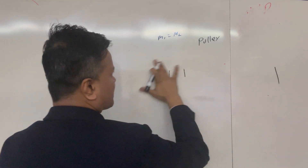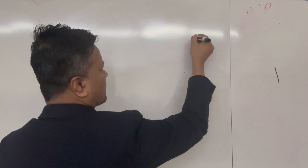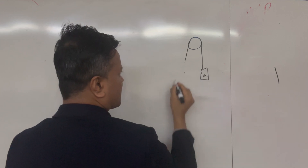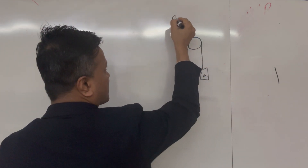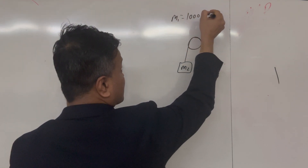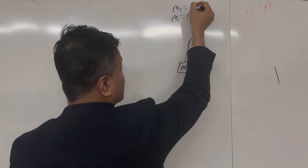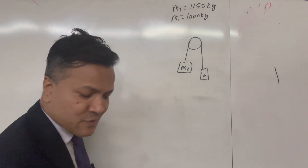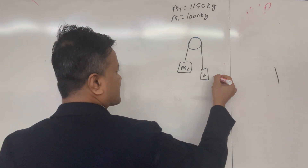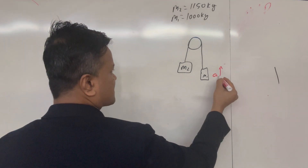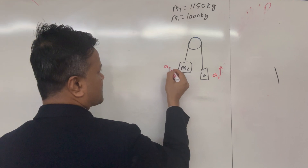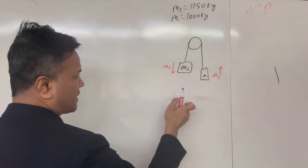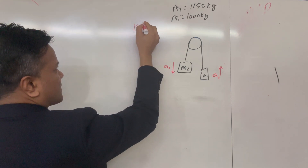Now let's consider a different scenario. You have a pulley, a rope, mass one and mass two. Mass one is 1,000 kilograms and mass two is 1,150 kilograms. We have to find the acceleration. Since it's just one body hanging on the rope, acceleration one is equal to acceleration two. We also see a tension force, and the tension force is always a pulling force.